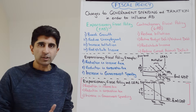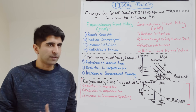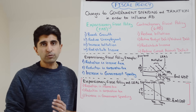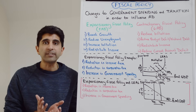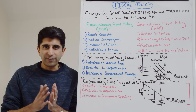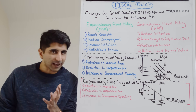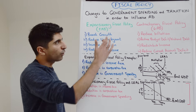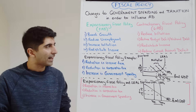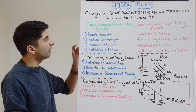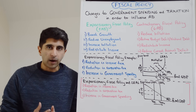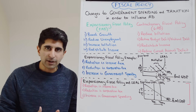So why would a government look to use expansionary fiscal policy and boost aggregate demand? Well, the first reason is to increase economic growth. If growth is sluggish or if the economy is in a recession, a boost to growth might be necessary. If AD increases, we get that increase in growth. It could also be to reduce unemployment — cyclical unemployment — again in a recession.